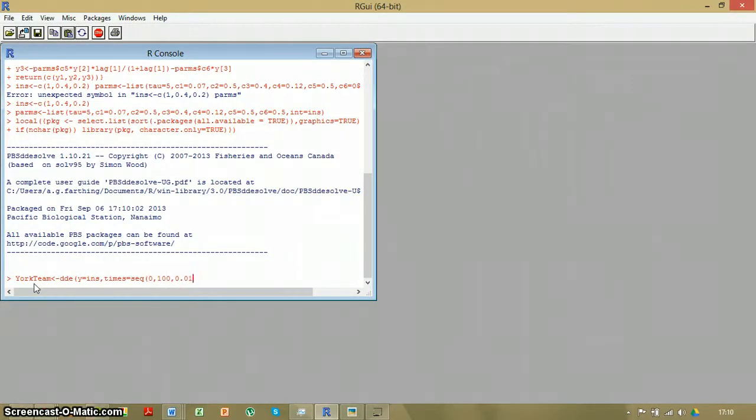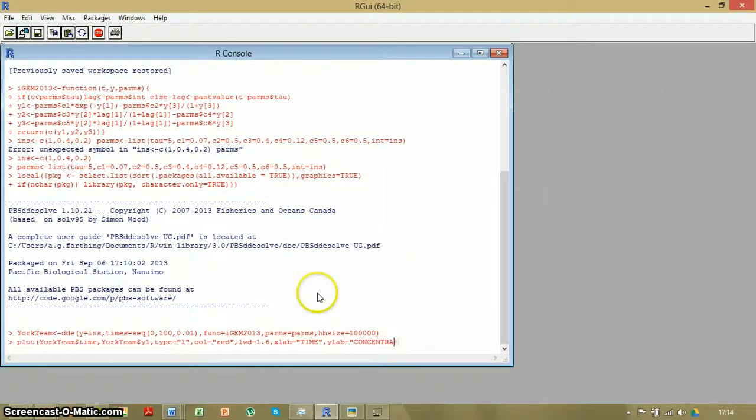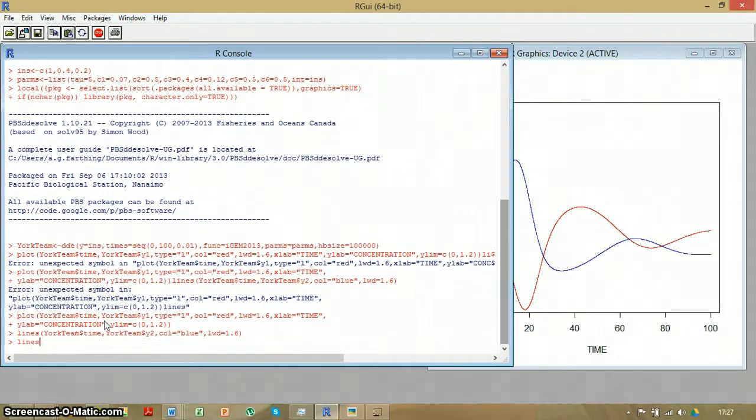Now we tell R to plot a graph. We define the labels, the axes, their limits, the colours of the lines, etc.